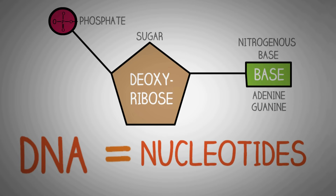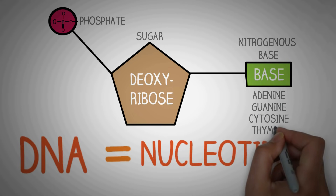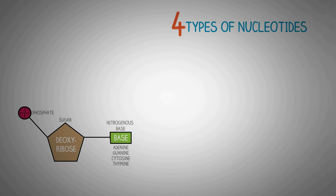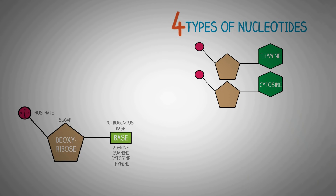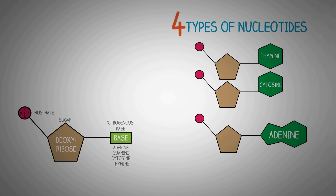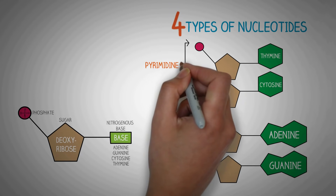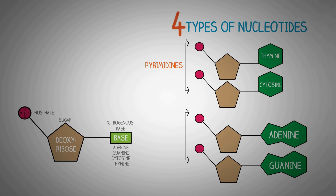We have four different types of bases that can be present inside the DNA molecule: adenine, guanine, cytosine, and thymine. These four nucleotides are arranged in two groups. The first group is known as pyrimidines, which contain thymine and cytosine — both single-ring bases. The second group contains purines, which have adenine and guanine as the nitrogenous base and are double-ring structures.